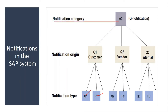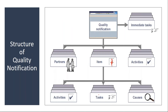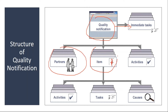You can create your own notification type if you want, which we will see when we go to the configuration. The structure of the notification: you create a notification, then maintain the immediate tasks, enter the partner information, item details — what are the reasons, what are the problems — and then activities you will capture: what tasks you are going to perform for each item, the activities, tasks, and causes.